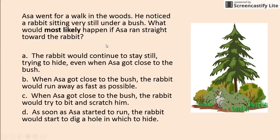Asa went for a walk in the woods and noticed a rabbit sitting very still under a bush. What would most likely happen if he ran straight towards the rabbit? The rabbit would not continue to stay still. It's not going to try and fight him since he's clearly much bigger. It won't dig a hole. When Asa got too close to the bush, the rabbit would run away as fast as possible — the rabbit will immediately run away and try to escape.